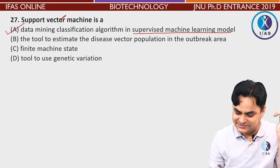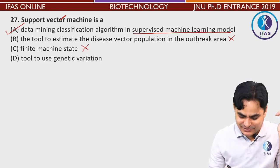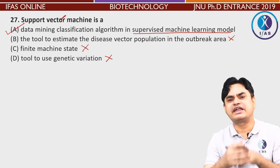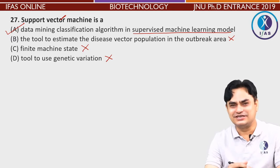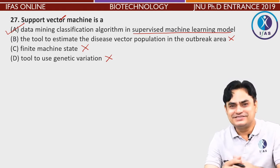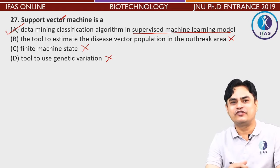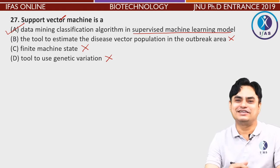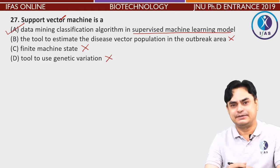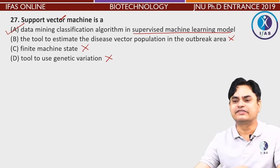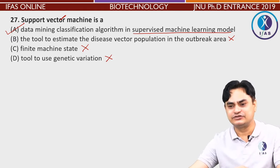'The tool to estimate the disease vector' is wrong. 'Finite machine state' is completely wrong. Actually, for those who know bioinformatics, this question is very easy. They deserve some questions that are straightforward for them so they get some benefit. Let's move to the next question.